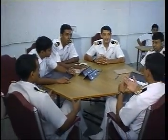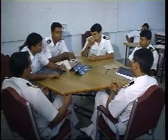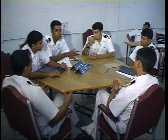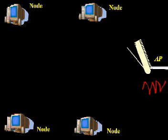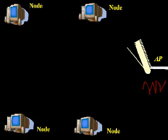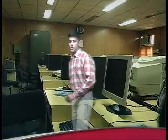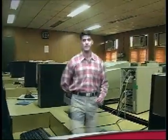Suppose two persons want to talk and both sense the carrier based on the silence and begin to speak at the same time. In Wi-Fi terminology, a collision occurs when both speak at once. The collision will result in an undecipherable message to the intended receivers. What we need is a polite contention method to get access to the medium. This is the collision avoidance mechanism of CSMA/CA.